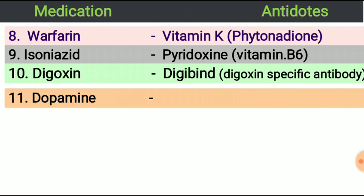Next, dopamine. Dopamine is a neurotransmitter used in heart problems; it increases heart pumping activity. The antidote used for dopamine is phentolamine.